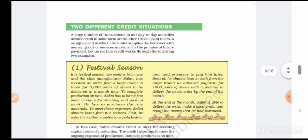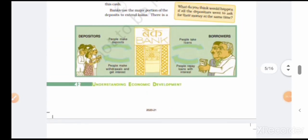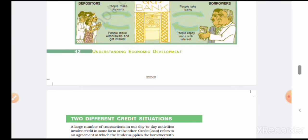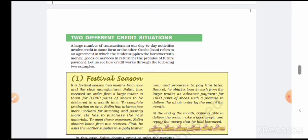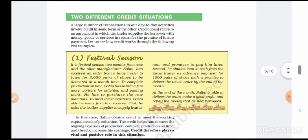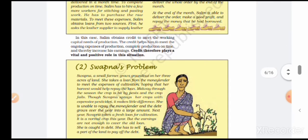Now we move to the next topic: two different credit situations. A large number of day-to-day transactions involve credit in some form or another. Credit or loan refers to an agreement in which the lender supplies the borrower money or service in return for the promise of future payment. Let us see two credit situations.